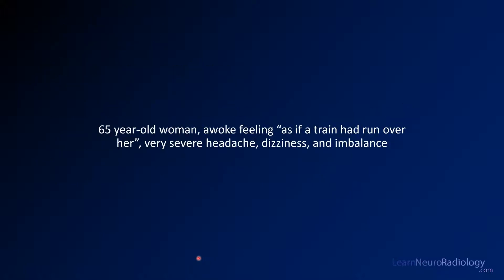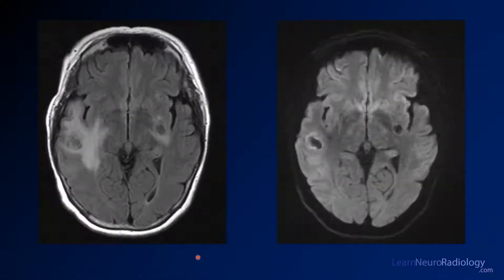Now we have a case of a 65-year-old woman who awoke feeling as if a train had hit her, and now has a headache, dizziness, and imbalance. Here you see a FLAIR and diffusion image through the central portion of the brain at the level of the basal ganglia. There's a relatively low T2 mass and another low T2 mass with surrounding edema. They're not very bright on DWI — one has a little brightness around the rim, the other is relatively normal on DWI.